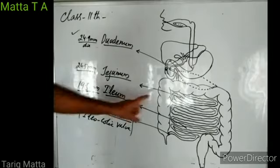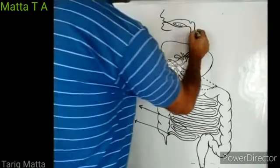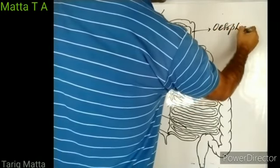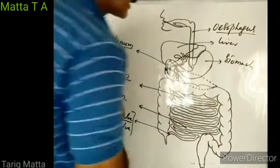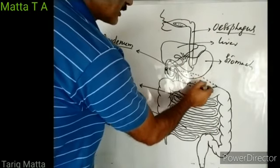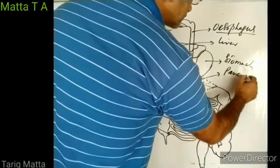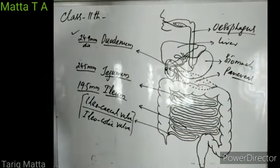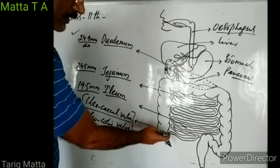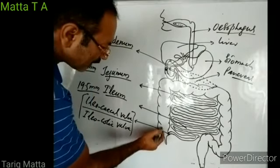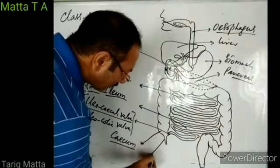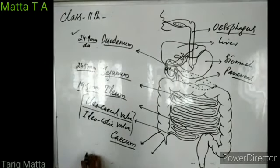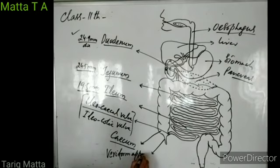These are the three different regions of small intestine. Looking at the diagram: this is the esophagus, stomach, liver, and pancreas — the leaf-like gland. After the small intestine starts the large intestine — the colon. The first part of the colon is a small pouch-like structure known as the cecum. Just below the cecum there is a small slender structure known as the vermiform appendix, which we can simply call the appendix.